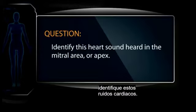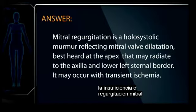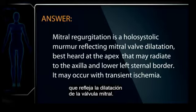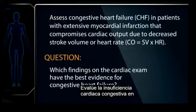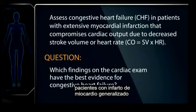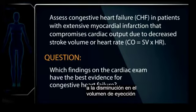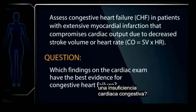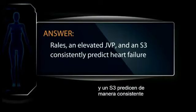Identify these heart sounds. Mitral regurgitation is a holosystolic murmur reflecting mitral valve dilatation, best heard at the apex and may radiate to the axilla and lower left sternal border. It may occur with transient ischemia. Assess congestive heart failure (CHF) in patients with extensive myocardial infarction that compromises cardiac output due to decreased stroke volume or heart rate. Which findings on the cardiac exam have the best evidence for congestive heart failure? Rales, an elevated JVP, and an S3 consistently predict heart failure.